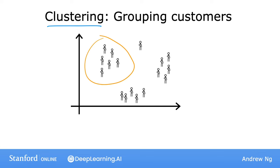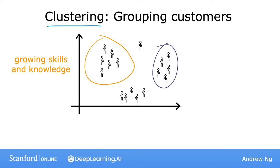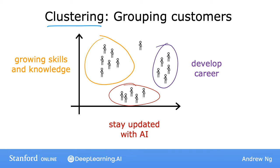One group's primary motivation is seeking knowledge to grow their skills. A second group's primary motivation is looking for a way to develop their career — maybe to get a promotion, a new job, or make some career progression. And yet another group wants to stay updated on how AI impacts their field of work. This clustering is what the team used to better serve the community and figure out the major categories of learners. Whatever your motivation, I hope I'll be able to help you on your journey, and I want you to know I love you all the same.